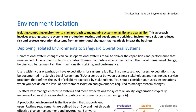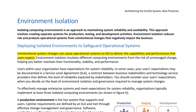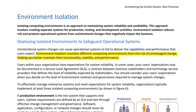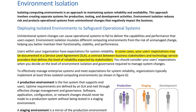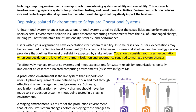Environment Isolation. Isolating computing environments is an approach to maintaining system reliability and availability. This approach involves creating separate systems for production, testing, and development activities. Environment isolation reduces risk and protects operational systems from unintentional changes that negatively impact the business. Unintentional system changes can cause operational systems to fail to deliver the capabilities and performance that users expect. Users within your organization have expectations for system reliability, which may be documented in a service-level agreement (SLA) — a contract that defines the level of reliability expected by stakeholders.